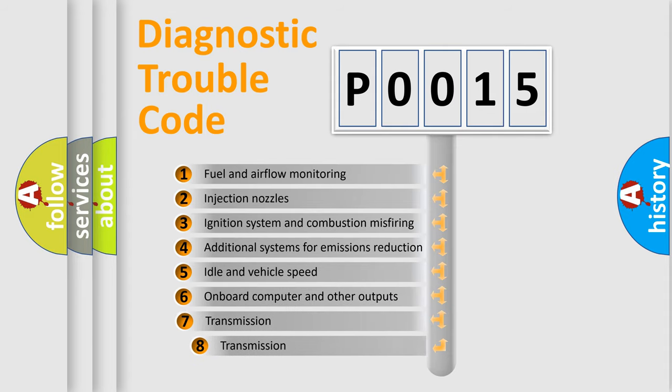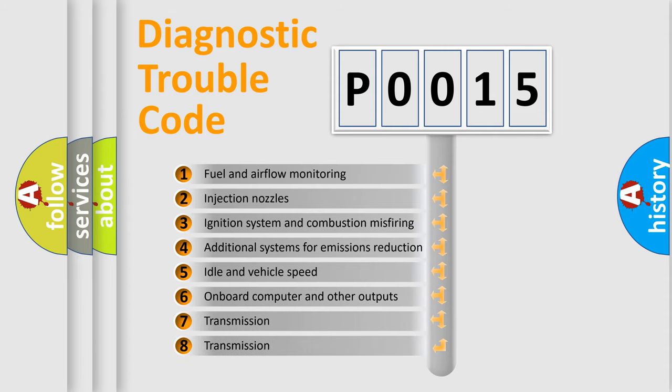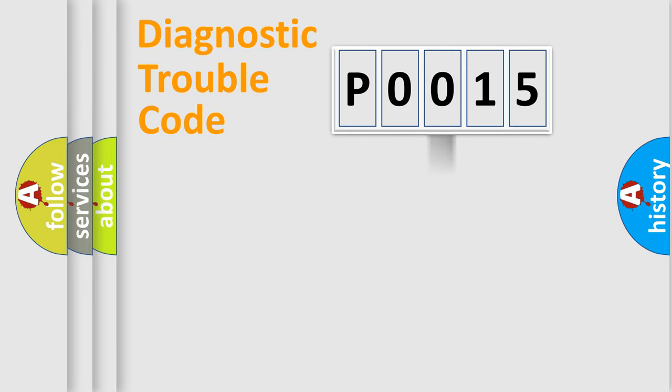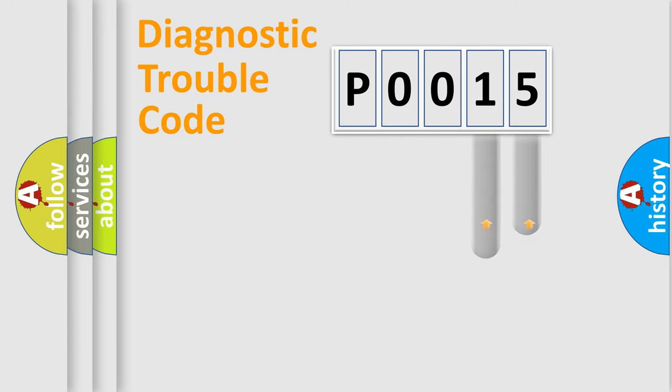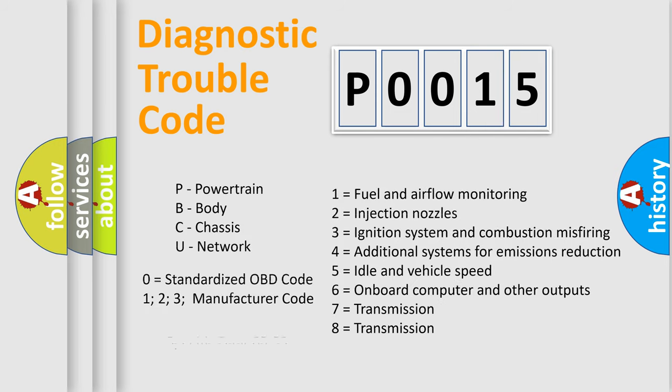The third character specifies a subset of errors. The distribution shown is valid only for the standardized DTC code. Only the last two characters define the specific fault of the group. Let's not forget that such a division is valid only if the other character code is expressed by the number zero.